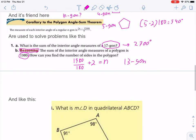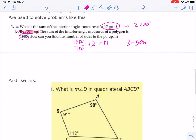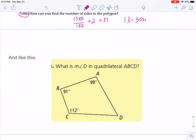Now, this, in addition to problems that are just asking you for the sum, they're also used to solve problems like this. Now, we know how many degrees total are in this shape because it has four sides. So, what is the measure of angle D?